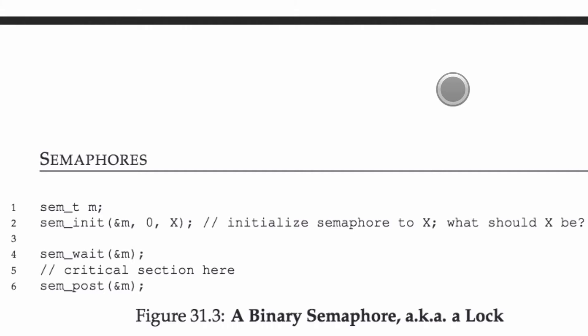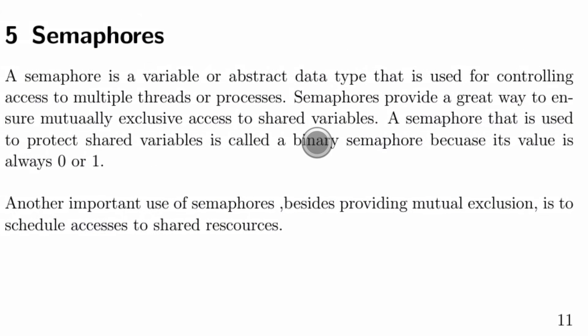Semaphores can provide an add-on to Mutexes. I have this nice PDF here that I've been making, which I am planning to open-source and release to the public soon. A semaphore is a variable or abstract data type that is used for controlling access to multiple threads or processes. A semaphore provides a great way to ensure mutually exclusive access to shared variables.